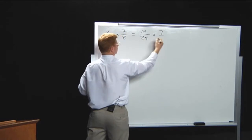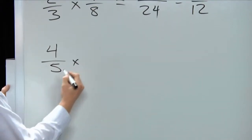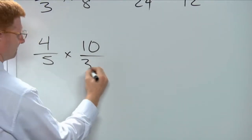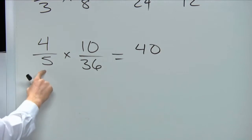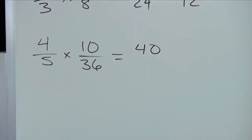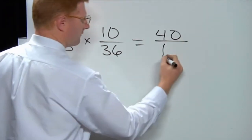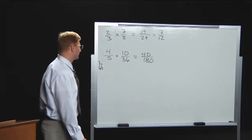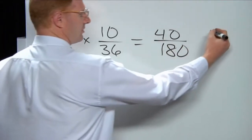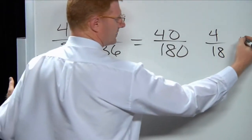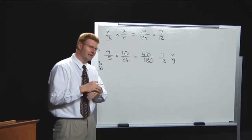Let's do one more: four-fifths times ten thirty-sixths. Multiply across — four times ten is forty, five times thirty-six is one hundred eighty — giving forty over one hundred eighty. Now simplify: a ten goes into both forty and one eighty, giving four over eighteen. Then two goes into both of those, giving us two-ninths. A lot of simplification going on there.